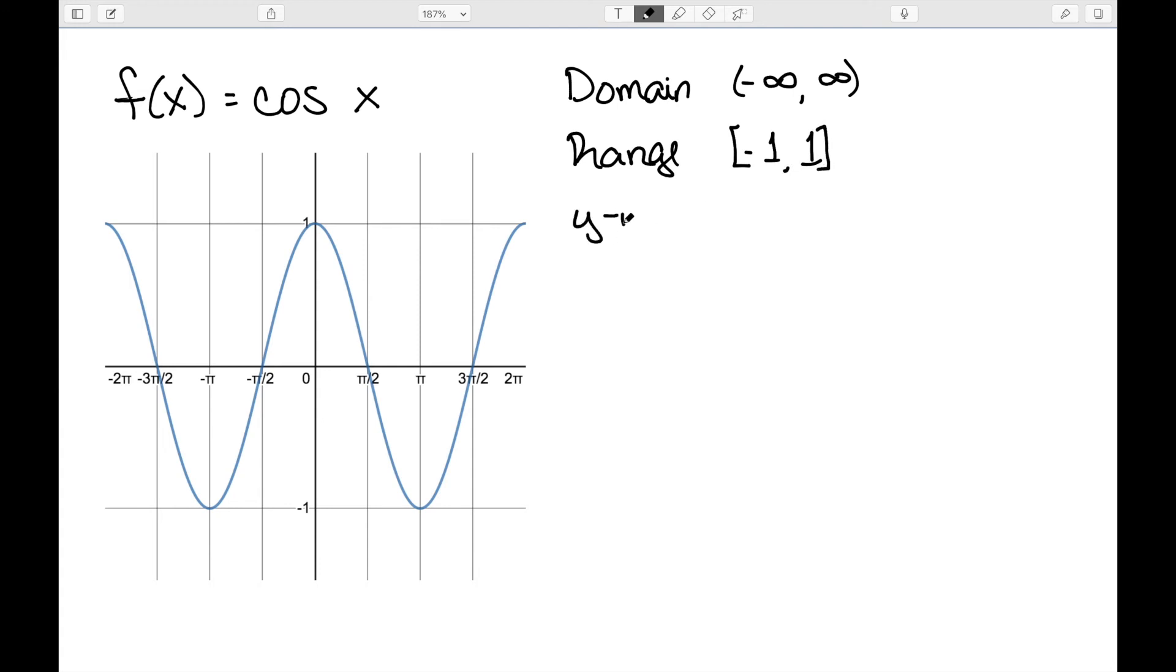This time my y-intercept is (0, 1). I cross the y-axis at 1. My x-intercepts are of the form k pi over 2 comma 0, where k is an odd integer.